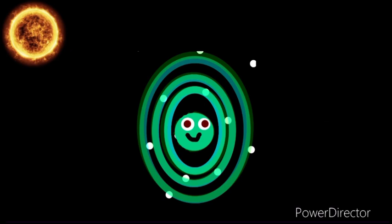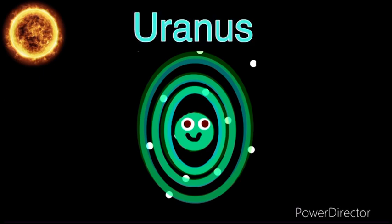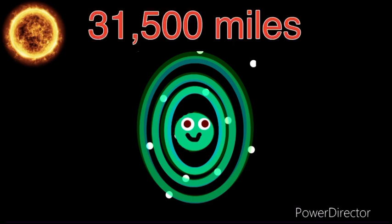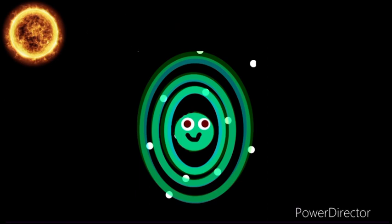I am Uranus and I have 13 rings, now come sing along and learn about me. 31,500 miles is the diameter of me, that's four times the diameter of the earth you see.